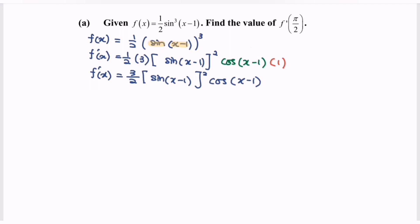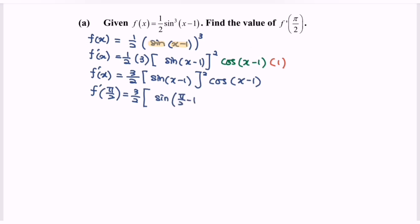Next, we substitute the value pi over 2, or 90 degrees. So f' at pi over 2 equals 3 over 2, multiplied with sine(pi over 2 minus 1) squared.